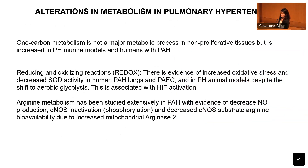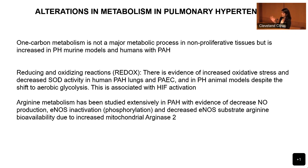Other metabolic alterations shown in pulmonary hypertension include one-carbon metabolism — not a major metabolic pathway, but it becomes important in highly proliferating cells, helping provide building blocks for those cells. Another important pathway is the redox pathway. Reactive oxygen species and increased oxidative stress have been shown in PH. Although ROS usually result from oxidative phosphorylation — which is reduced in PAH — the enzymes that degrade ROS are also decreased in PAH, and HIF activation drives this oxidative stress.